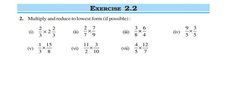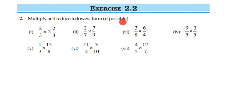Hello everyone, here I am doing Exercise 2.2, chapter Fractions and Decimals of Class 7, second question. The question is: multiply and reduce to the lowest form if possible. If possible means if we can cancel them, we have to cancel and bring it to the lowest form or the reduced form. So first we have to multiply and then we have to reduce it.